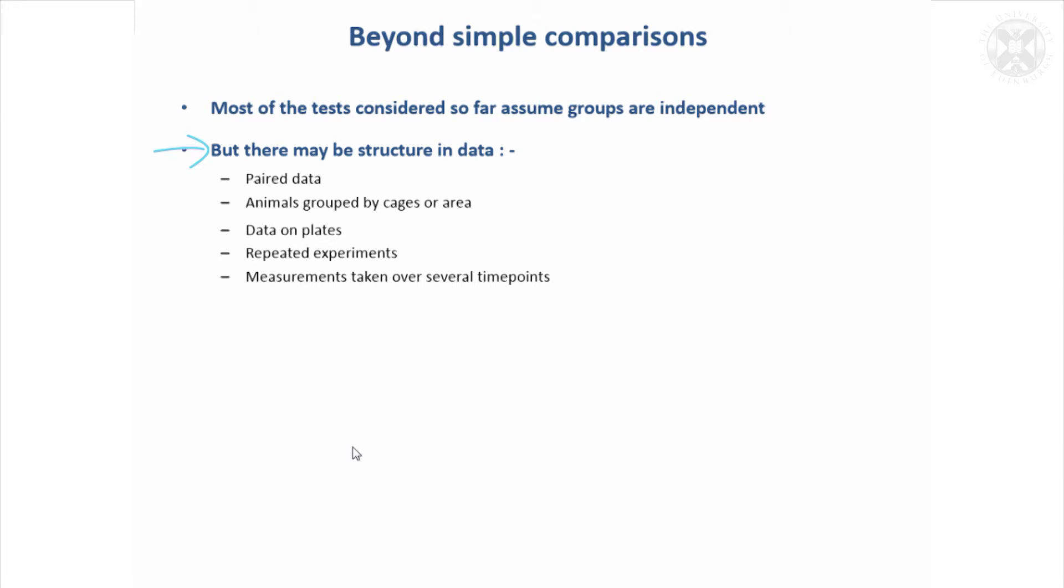We have looked a bit at paired data and looked at how to cope with that. There might be groupings in the data - animals might be grouped by cages or areas. You might have an experiment where you're looking at plates, making measurements on different plates, and so the data are grouped in the plates. Sometimes I've found people repeat - they do an experiment on 12 mice and then repeat it to make sure they get the same results and then try and combine them. So there's that structure to take into account.